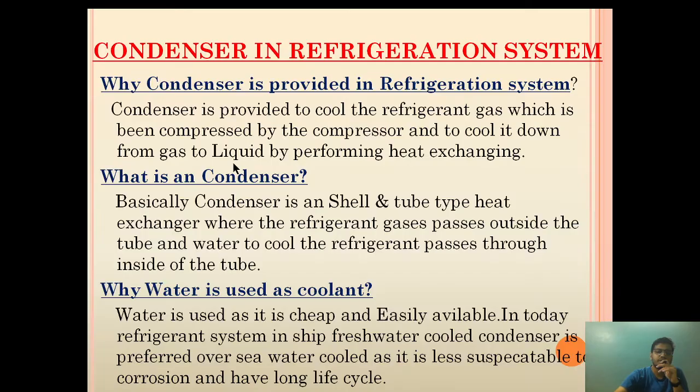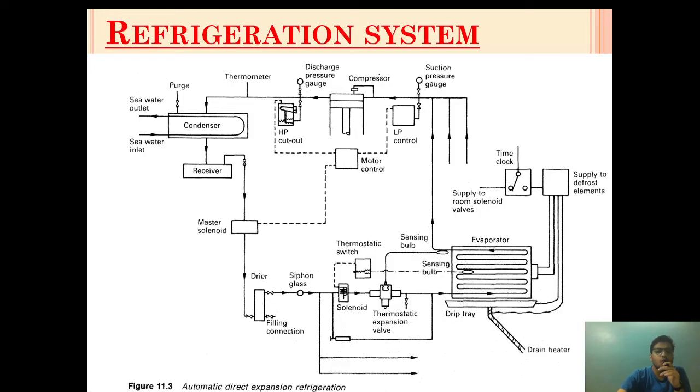So why is condenser provided in a refrigeration system? Condenser is provided to cool the refrigerant gas which has been compressed by the compressor and to cool it down from gas to liquid by performing heat exchanging. After the refrigerant has been compressed, it has high pressure gaseous refrigerant which is sent to a condenser.